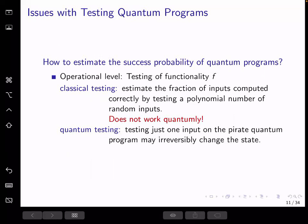So what are some issues with this security game? In the classical setting, we would typically have the challenger estimate the fraction of correct evaluations by picking a large enough number of inputs at random or from an appropriate distribution, running the copy protected program on these inputs and computing the fraction of correct evaluations.